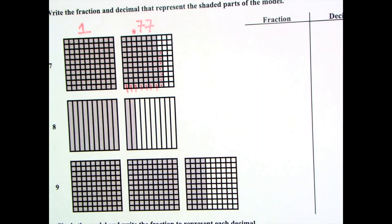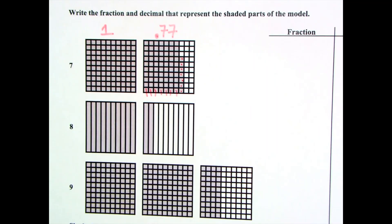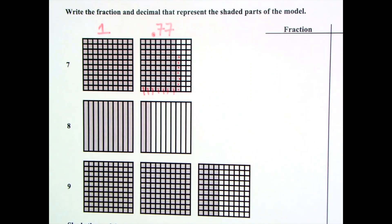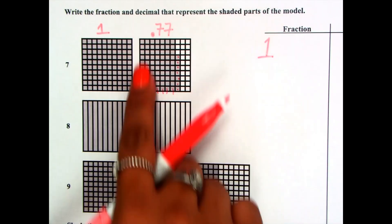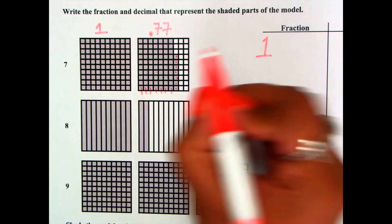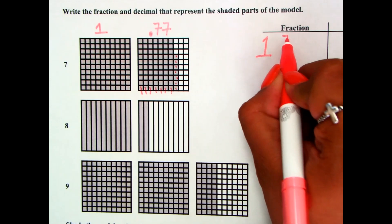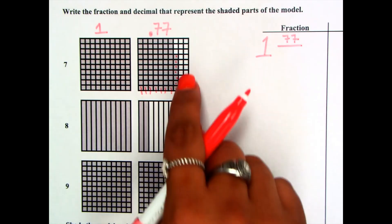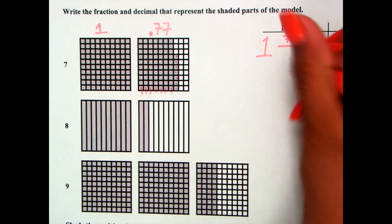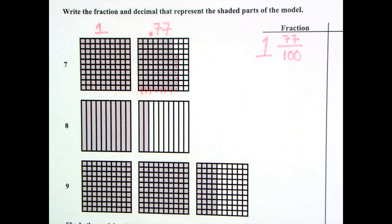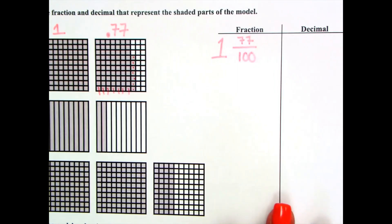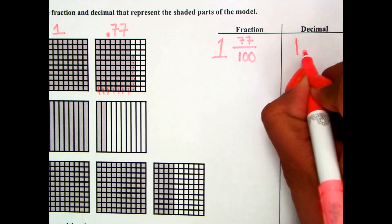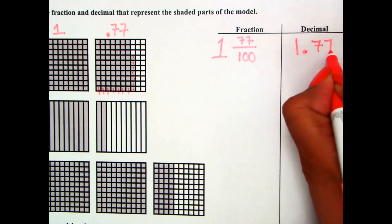In our fraction we're going to use a mixed fraction. A mixed fraction, remember, has a whole number and a fraction included in it. Do I have a whole? Yes, I have one whole. How many parts are shaded? Our numerator is our parts shaded — 77. Our denominator should be our total — 100. If I were to write this as money, it would be one whole dollar and 77 cents. So I would have one whole, my decimal separating the whole number from the decimal, and 77 hundredths.